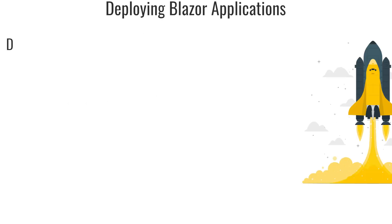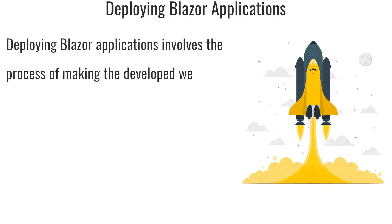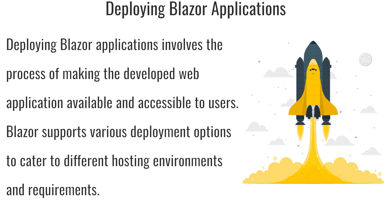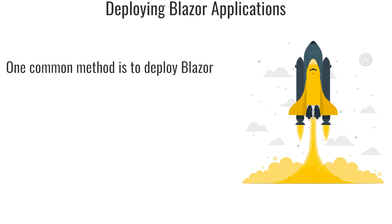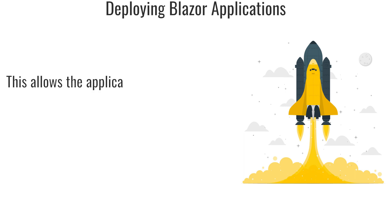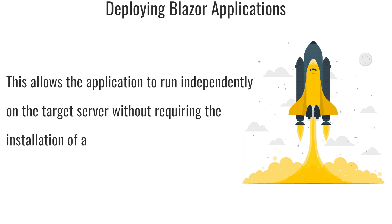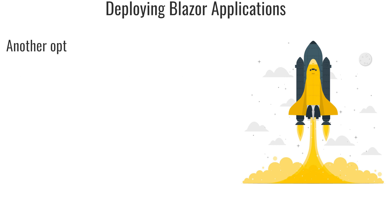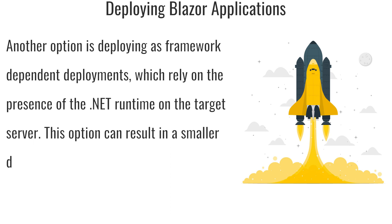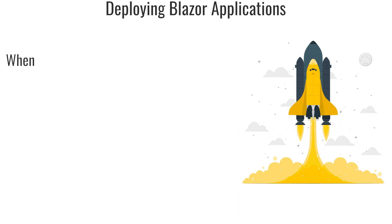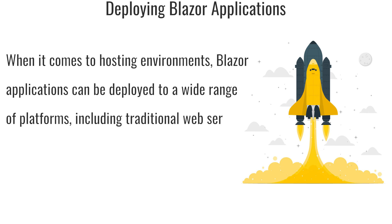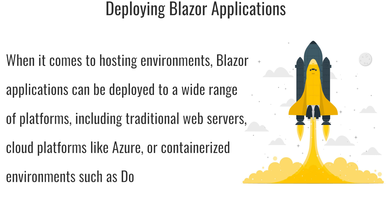Deploying Blazor applications involves the process of making the developed web application available and accessible to users. Blazor supports various deployment options to cater to different hosting environments. One common method is to deploy Blazor applications as self-contained deployments, which include all the necessary runtime components and dependencies, allowing the application to run independently on the target server. Another option is deploying as framework-dependent deployments, which rely on the presence of the .NET runtime on the target server, resulting in a smaller deployment size. Blazor applications can be deployed to a wide range of platforms, including traditional web servers, cloud platforms like Azure, or containerized environments such as Docker.